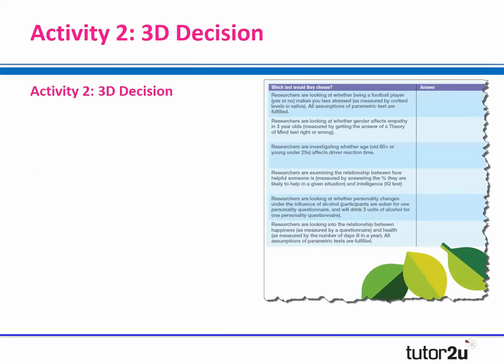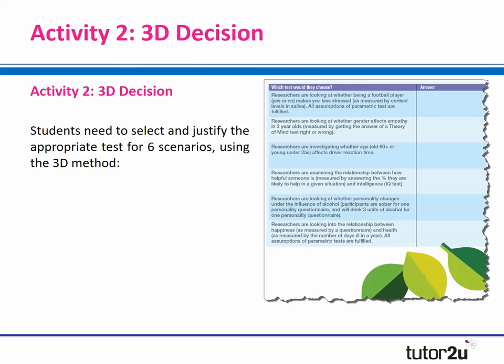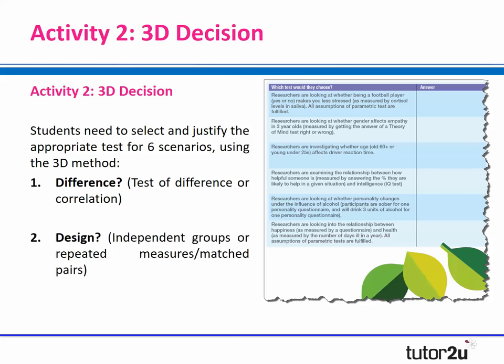With this resource, you get six different research statements. Students have to select what test they'll use to analyse the data and then justify their test using the 3D method. The three Ds are: first D — was it a test of difference or correlation? Second D — what design was used: independent measures, repeated measures, or matched pairs? Third D — what level of data was used: nominal, ordinal, or interval? Using those three Ds, they can achieve four out of four marks, assuming they get the correct test.